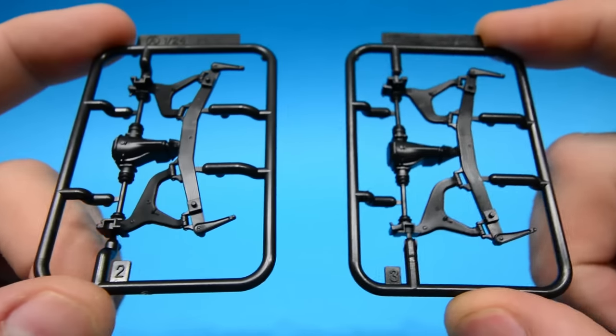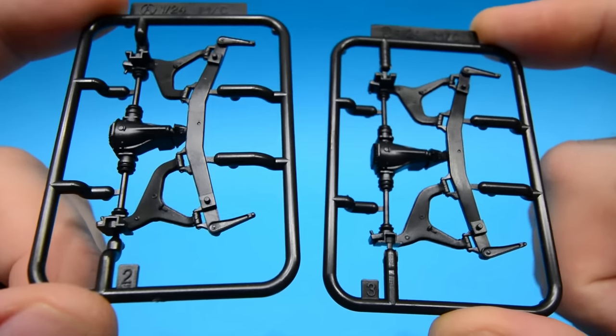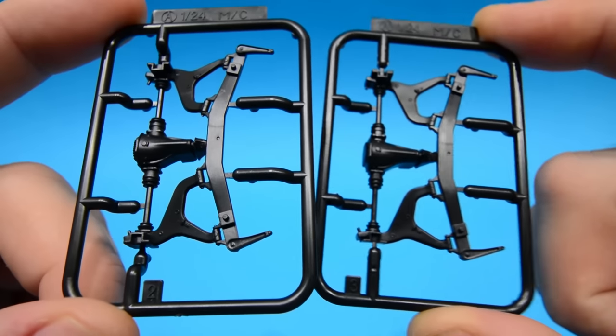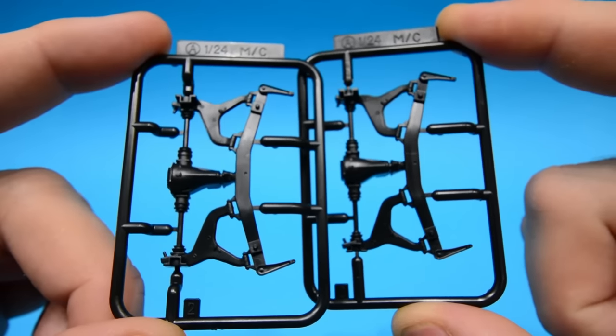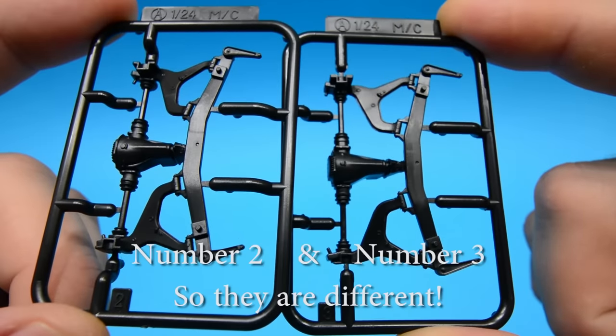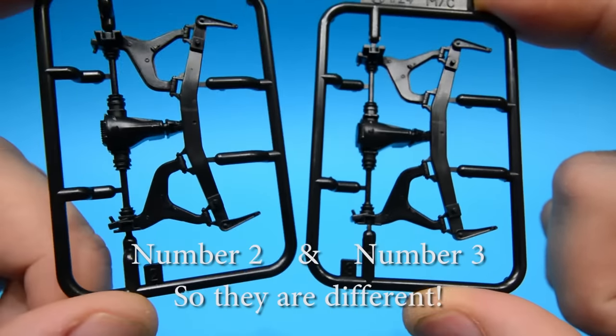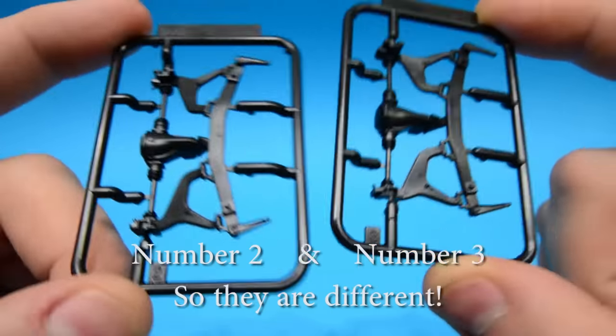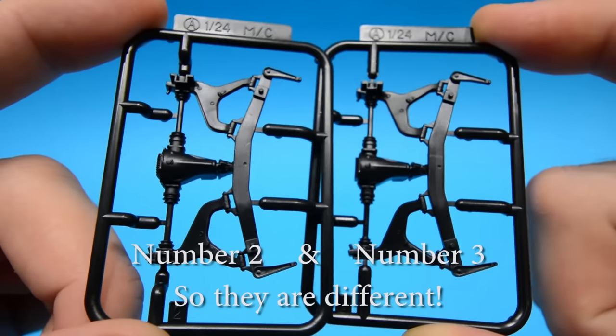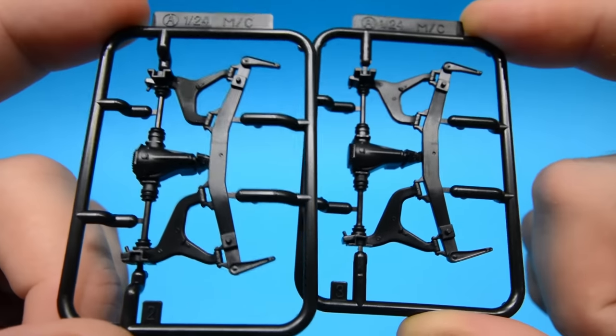Two more sprues now that are identical. Rear subframe airing differential. It doesn't say in the instructions that one is used and one isn't. I'm not sure if it's just an error that you get two in there but unless one gives you more camber or more lows. Who knows? Yeah the detail on that is nice as well. Really good.